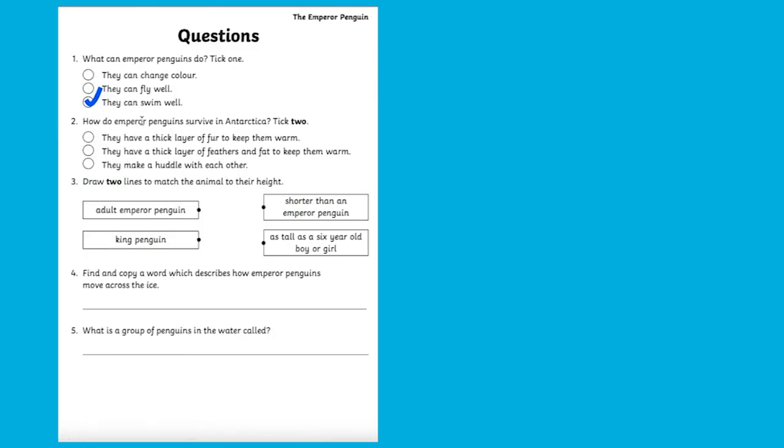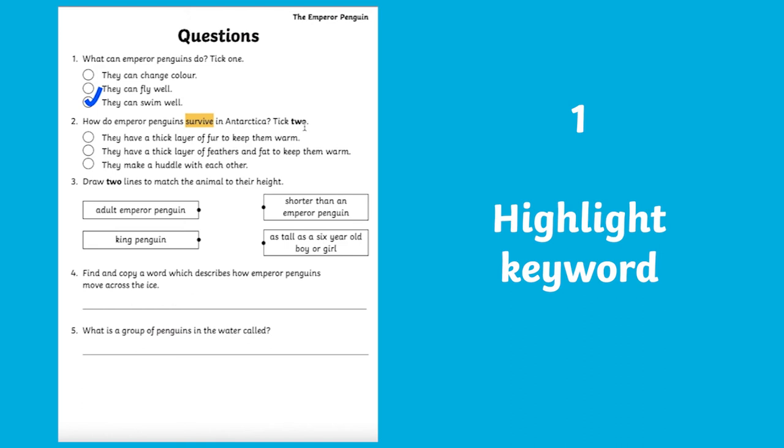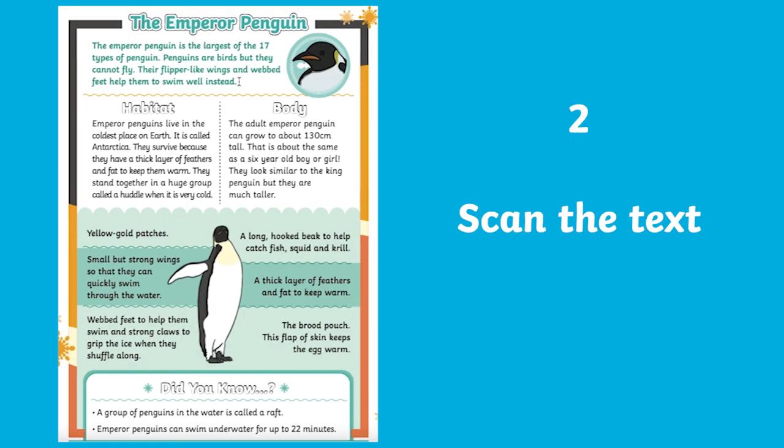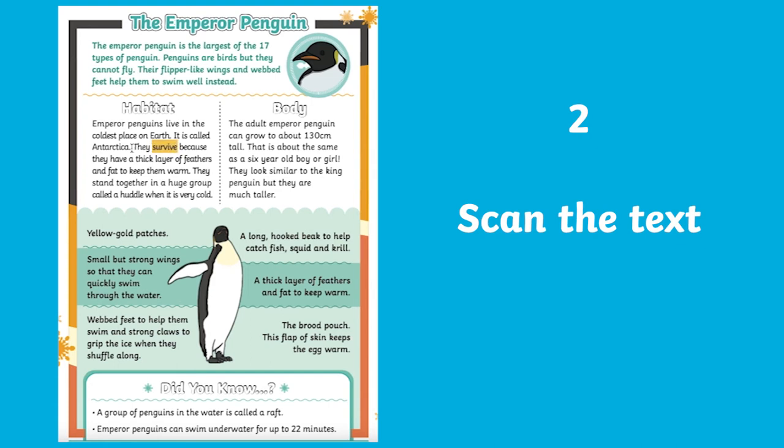A great way to answer comprehension questions is to follow these four steps. Step number one, highlight the keyword in the question. Step number two, scan the text for the keyword. Step number three, read around the keyword.